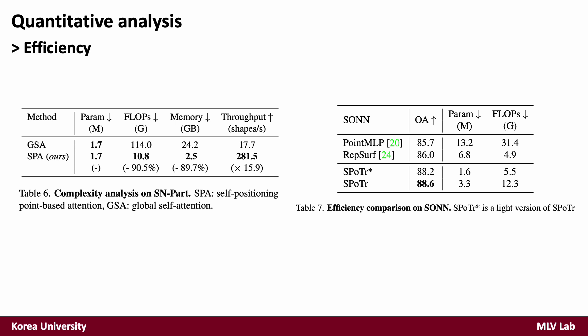We also analyze the space and time complexity to validate the computational efficiency of SPFormer. We compare the efficiency of our SPA with global self-attention and empirically prove the efficiency of SPA over GSA. We also investigate the efficiency of SPA by comparing our method with recent baselines such as PointMLP and CurveNet. It is worth noting that SPFormer achieves the best performance with fewer parameters — 3.3M — compared to 13.2M for PointMLP and 6.8M for CurveNet.